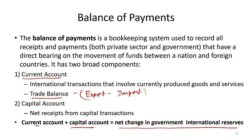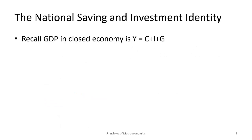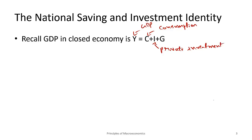This has a very important bearing on how we trade and how we run our budget deficit, which will become clearer as we discuss the national saving and investment identity. If you recall, GDP in a closed economy is Y = C + I + G — an identity you may have covered in an introductory macroeconomics class, where Y stands for GDP, C stands for consumption, I stands for private investment, and G stands for government expenditure.